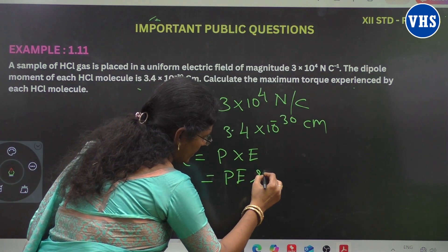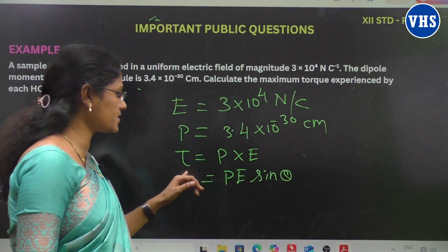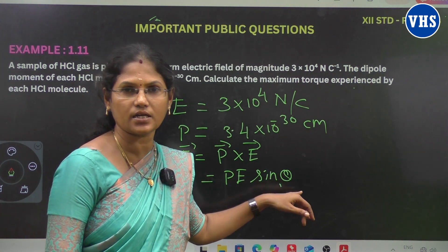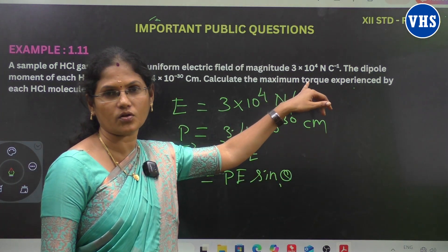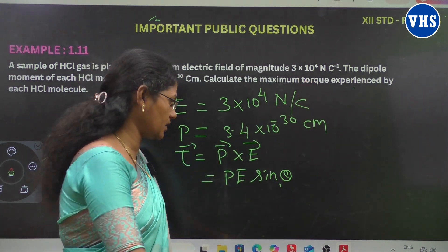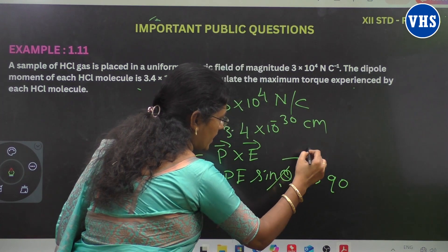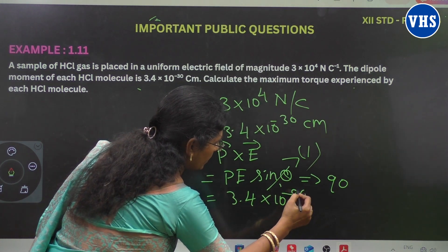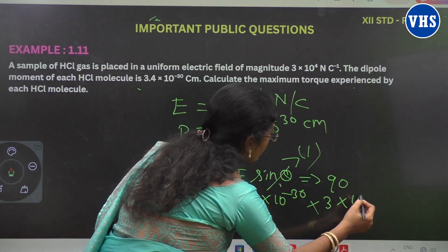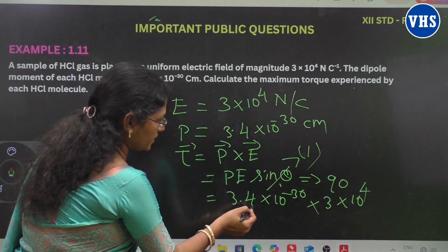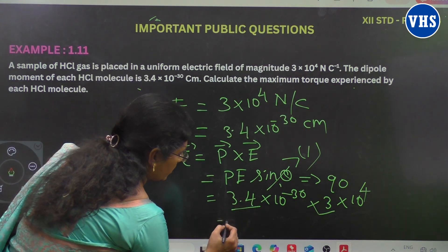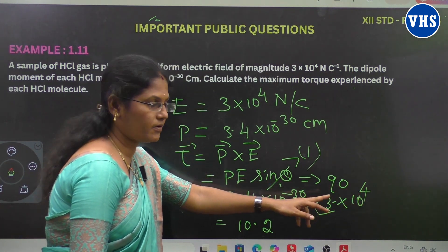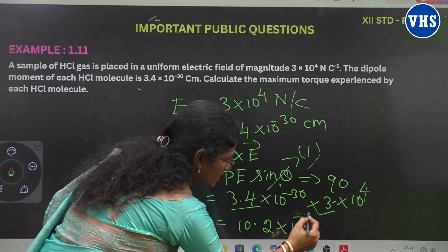The torque formula: tau is equal to P cross E. The cross product means you have to use sine theta. So tau = P E sin theta. To find the maximum torque, we put theta equal to 90 degrees. Sin 90 is 1. So tau = P × E × 1. P value is 3.4 × 10⁻³⁰ and E is 3 × 10⁴. Multiplying: 3.4 × 3 = 10.2, and the power is minus 30 plus 4, giving 10 to the power of minus 26.